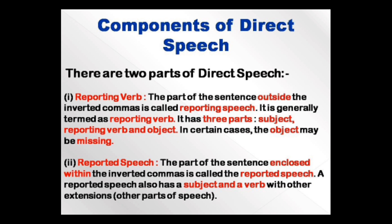There are two parts of direct speech. One is the reporting verb and the other is reported speech. The part of the sentence outside the inverted commas is called the reporting speech, generally termed as reporting verb. It has three parts: subject, reporting verb, and object — though in certain cases the object may be missing. The part enclosed within inverted commas is called the reported speech, which also has a subject and a verb with other extensions.